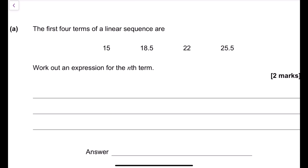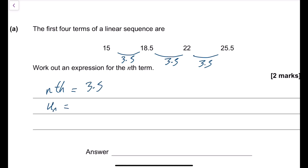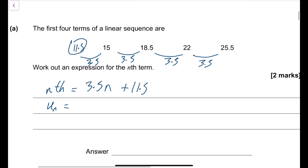This is a linear sequence — it goes up 3.5 every time, so that tells you the nth term starts with 3.5n. To find what you add or subtract, go back 3.5 from the first term: 15 minus 3.5 is 11.5. So the nth term is 3.5n plus 11.5.